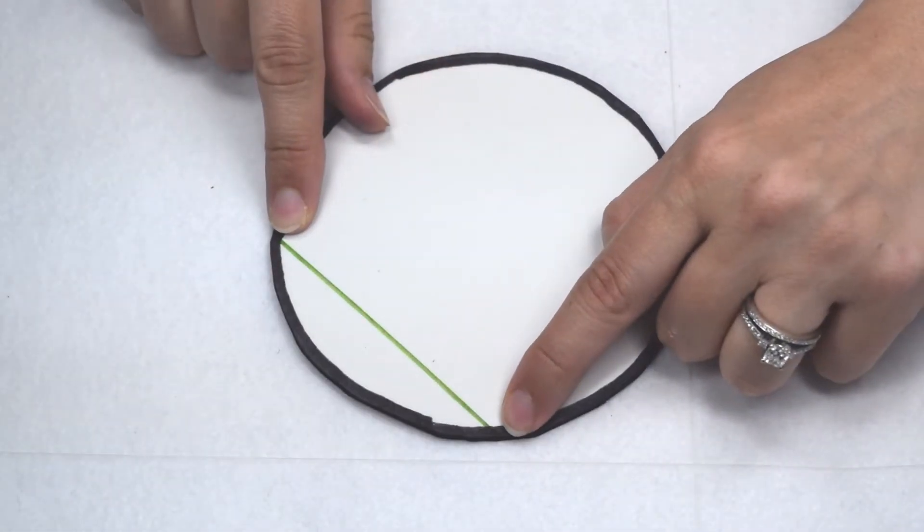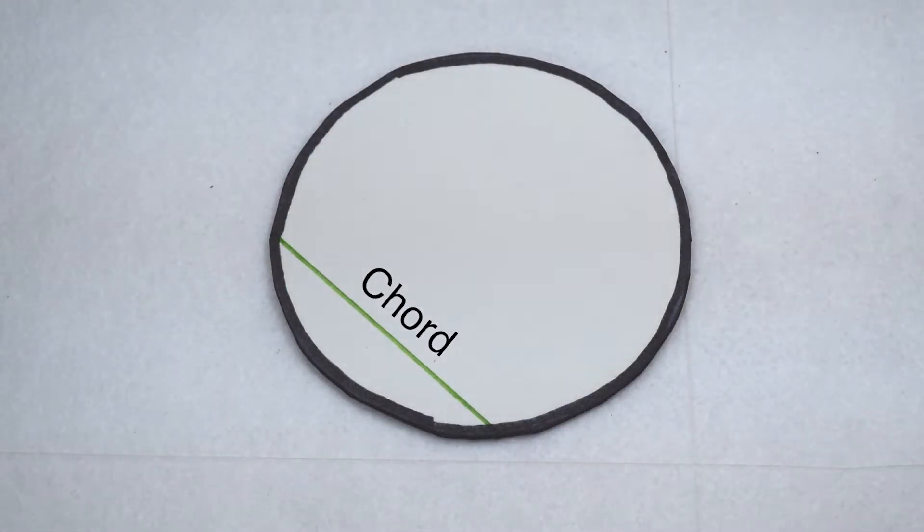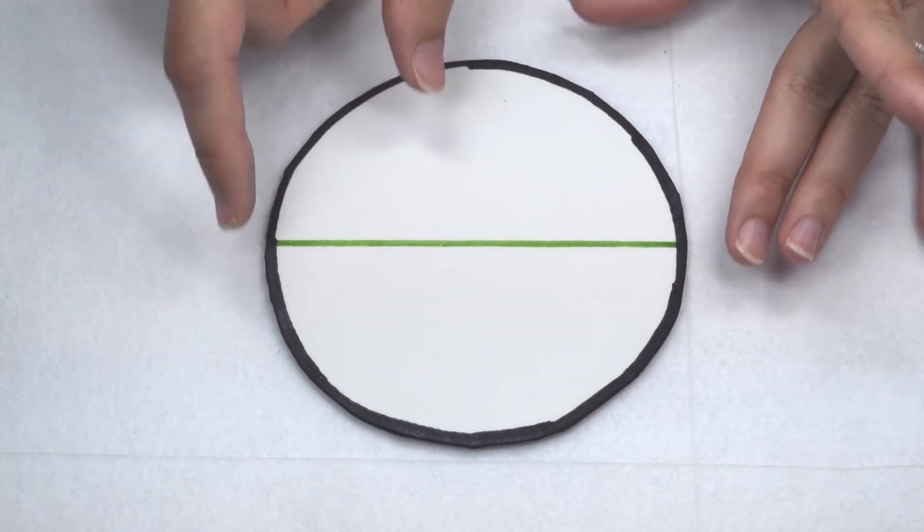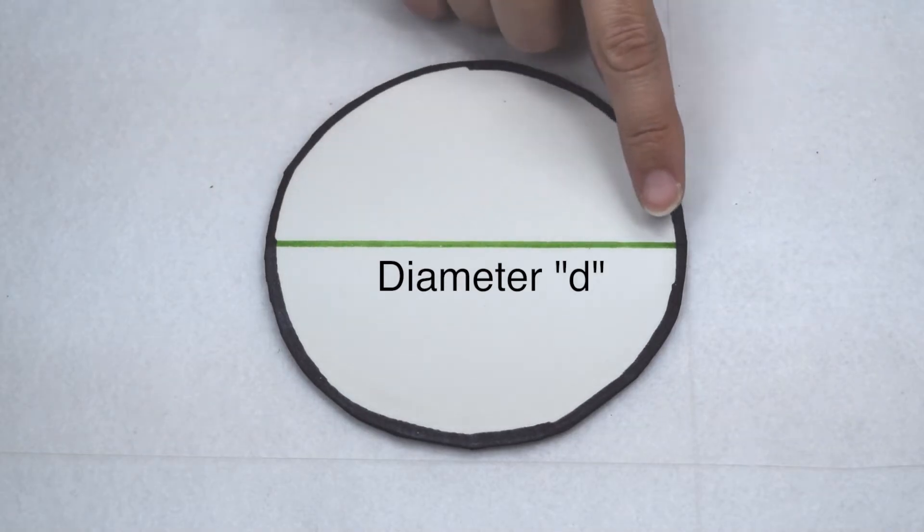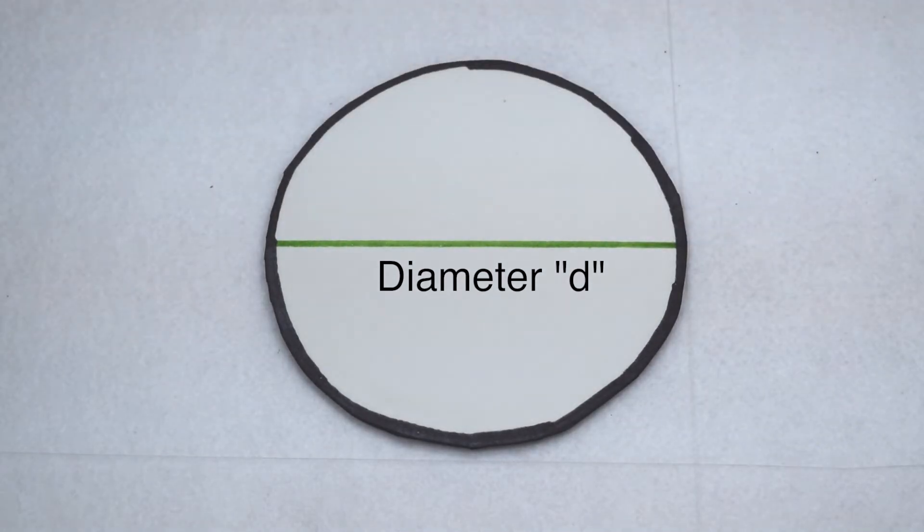If I want to measure between two points on the outside edge of a circle, then I've measured a chord. There is one chord that we use most often, though, and that is the circle's diameter. The circle's diameter is the longest chord because it measures from one edge through the middle to the opposite edge of the circle. I can abbreviate diameter using a lowercase d.